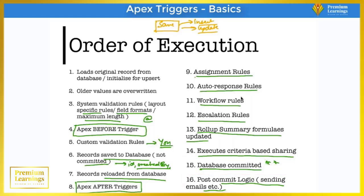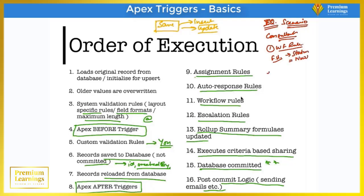Let me write a scenario-based interview question based on this slide. Suppose you have written a workflow rule with a field update that sets the Status field to 'New' when you create a particular record. You have also written an Apex trigger that updates the Status field to 'In Progress' on the same event. So on the same event, you are trying to set two different values for the same field.